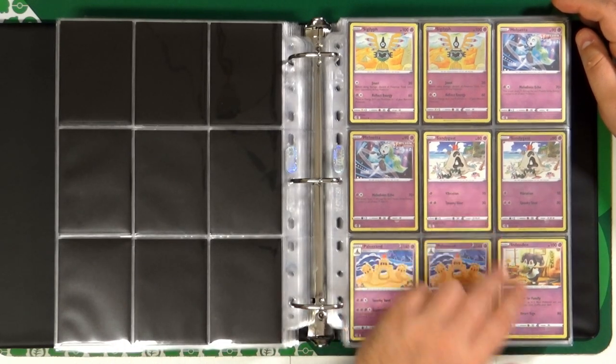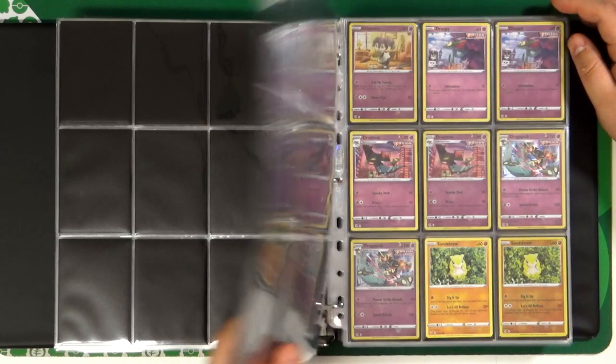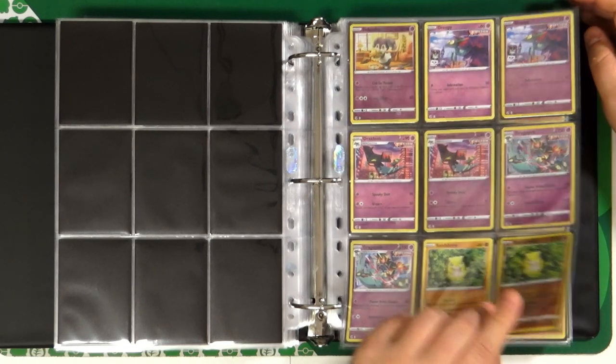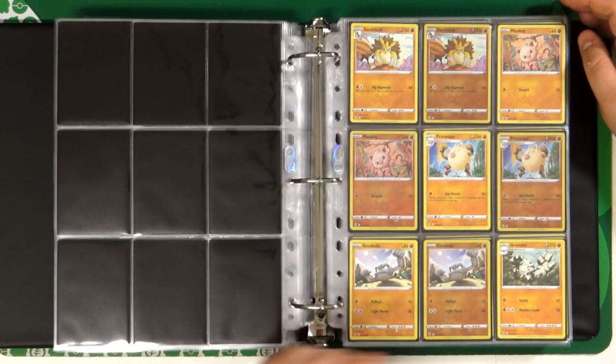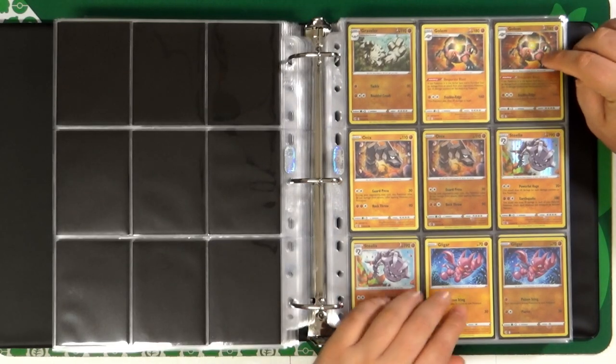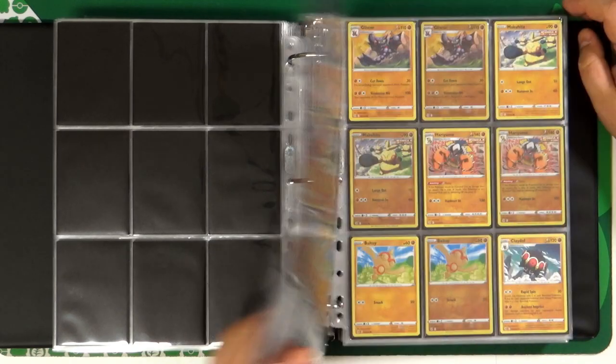Sandygast, also with the same beach background as Araquanid and Mudkip. Dragapult, Dreepy. Golem, also an amazing artwork. Onix and Steelix.